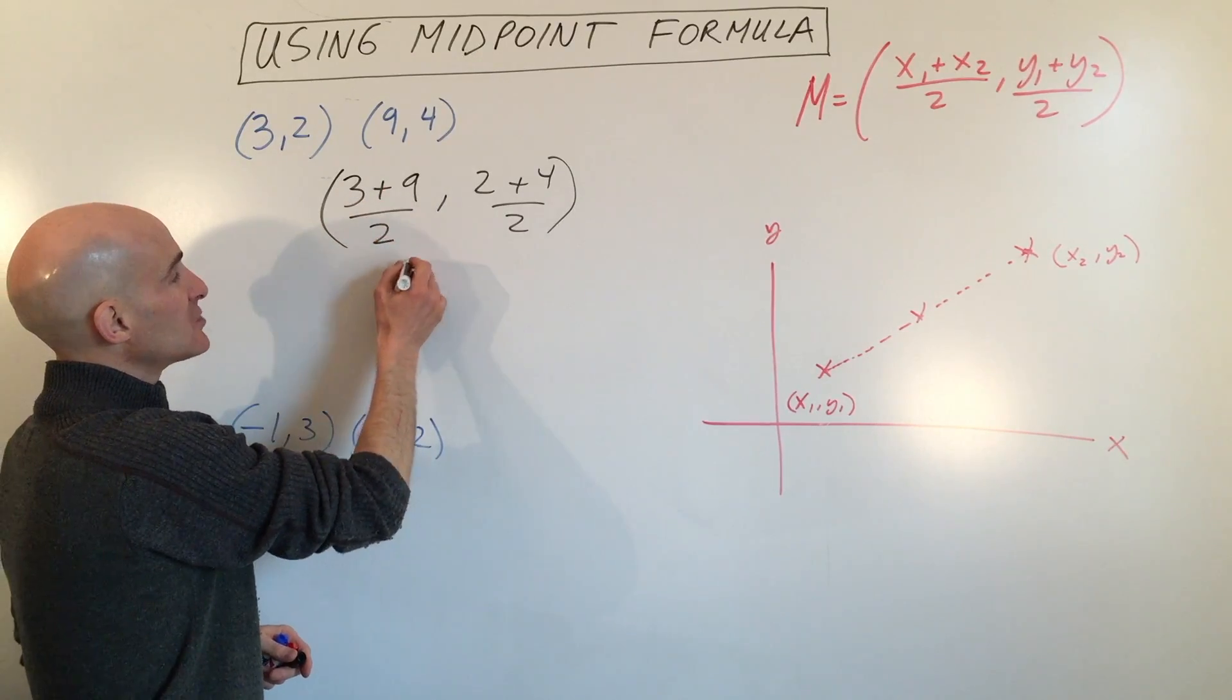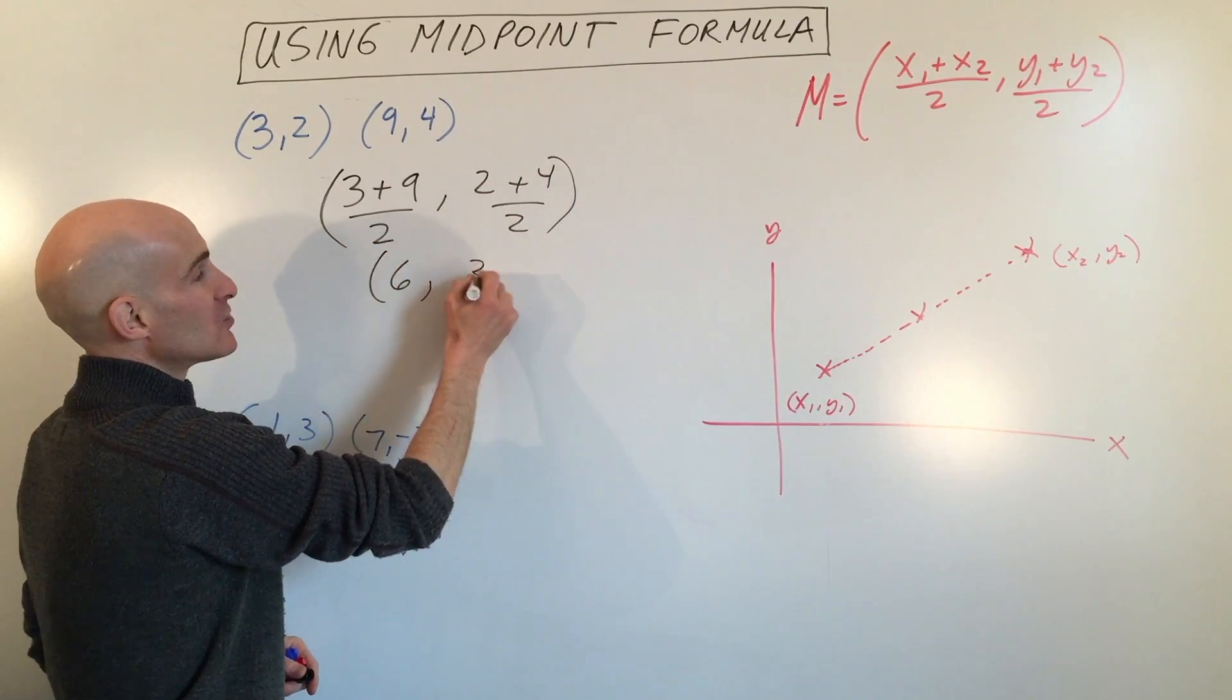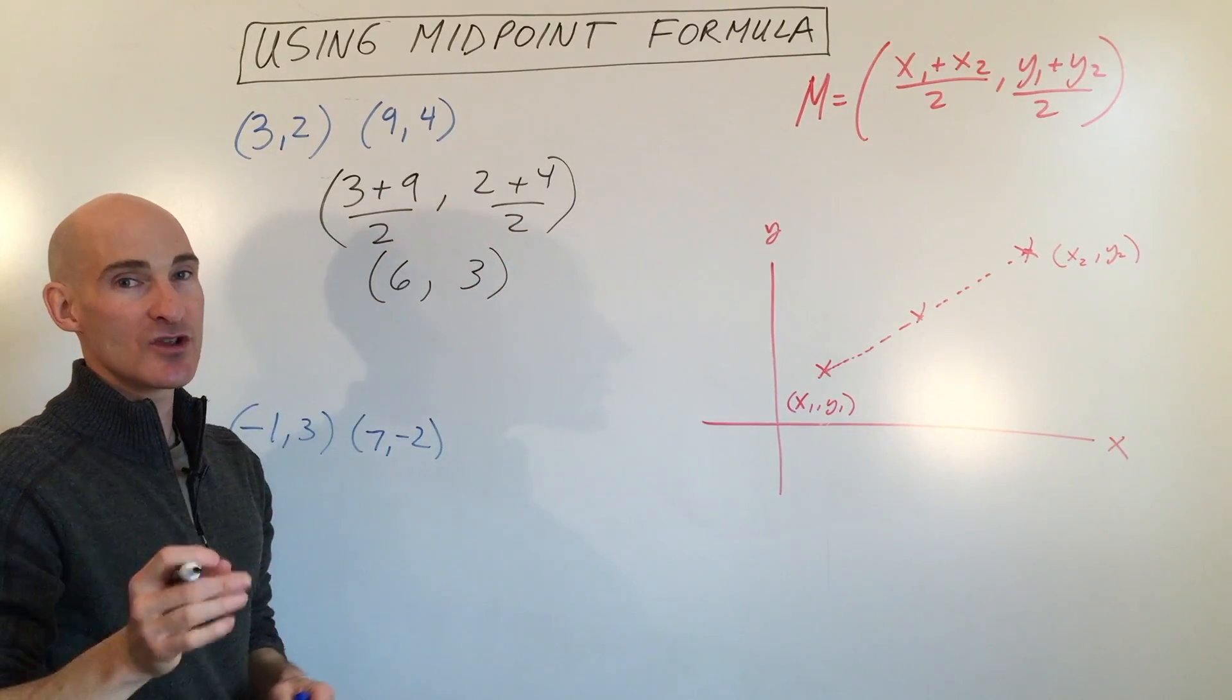So we get 12 divided by two, which is six. Six divided by two, which is three. So six, three is going to be your midpoint.